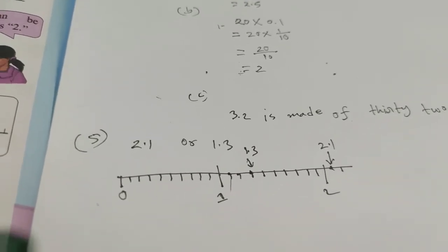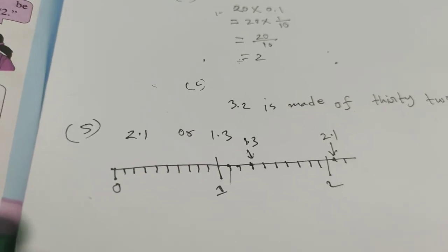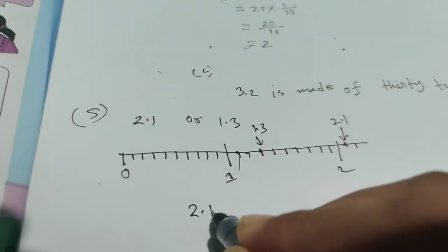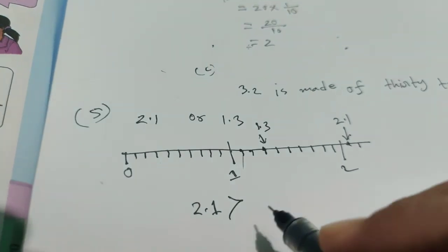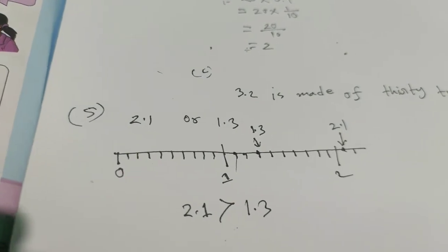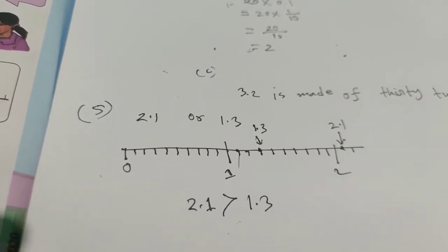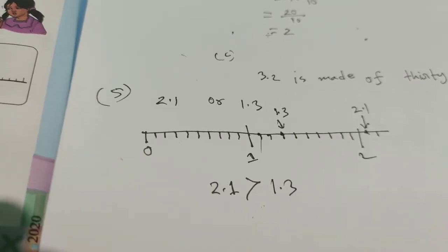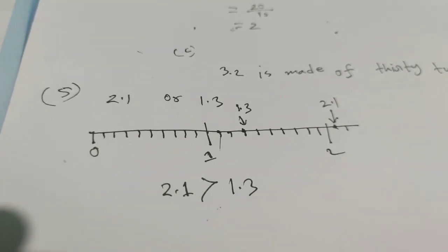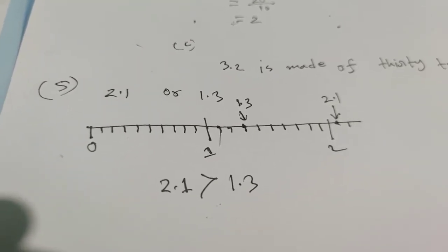So the answer is 2.1 is greater than 1.3, because 2.1 is made of 21 × 0.1s and 1.3 is made of 13 × 0.1s.